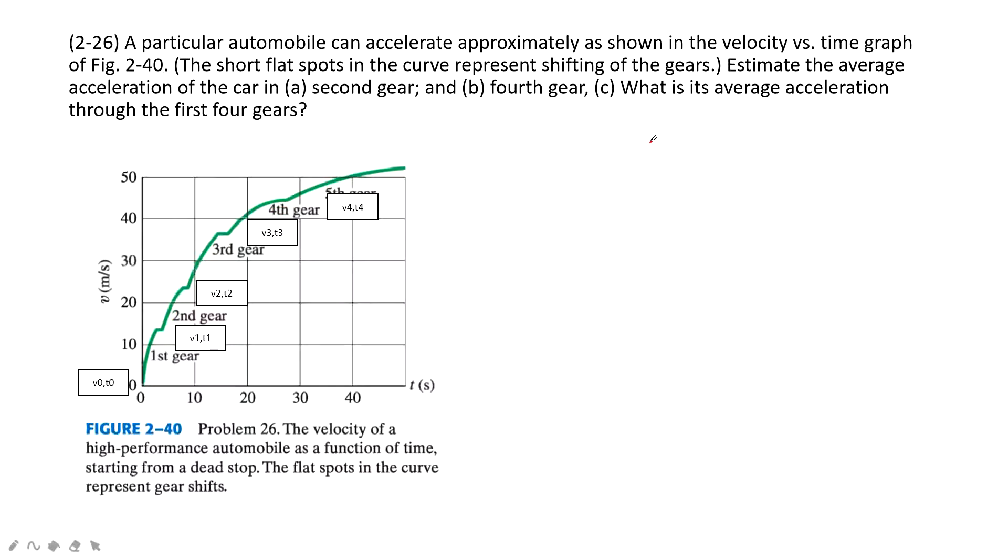is we look at the average acceleration in the first four gears. So first four gears from the origin to the 4th gear is there. And then we can find the V4 and T4 and find the acceleration by using the velocity divided by time taken. And we are done.